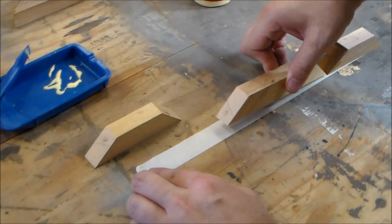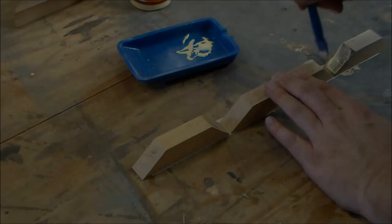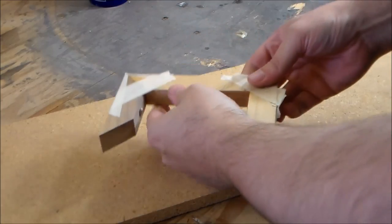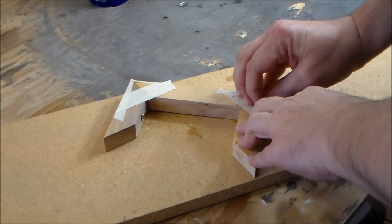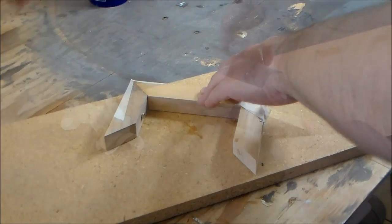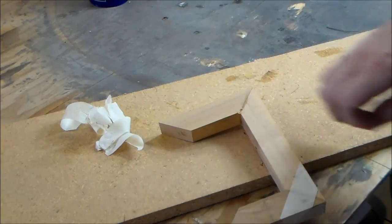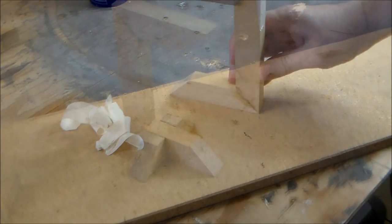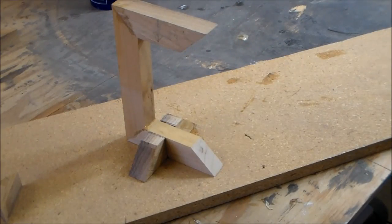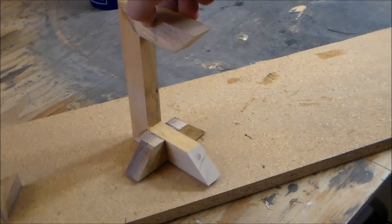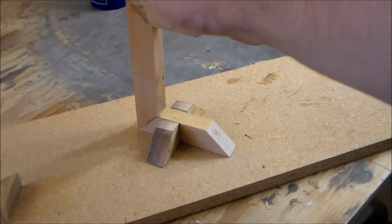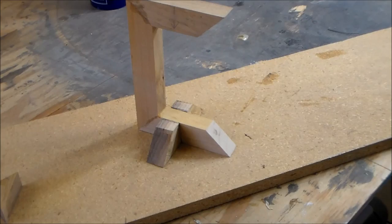Alright. Looking better. Maybe a stand of some sort. Alright. Tim and I got that sorted. Put ourselves a little stand here. Half lap joint. Onto the sanding.